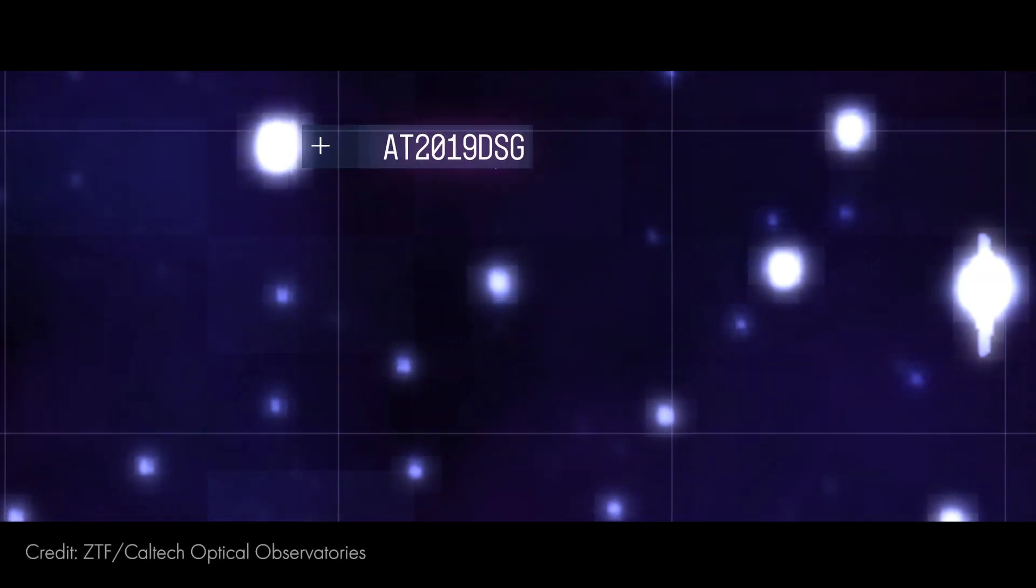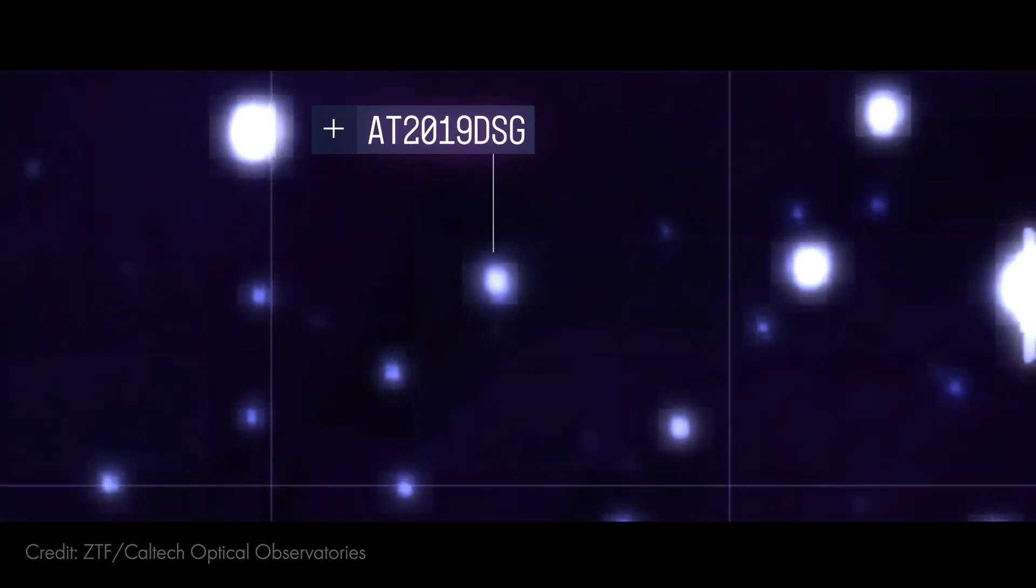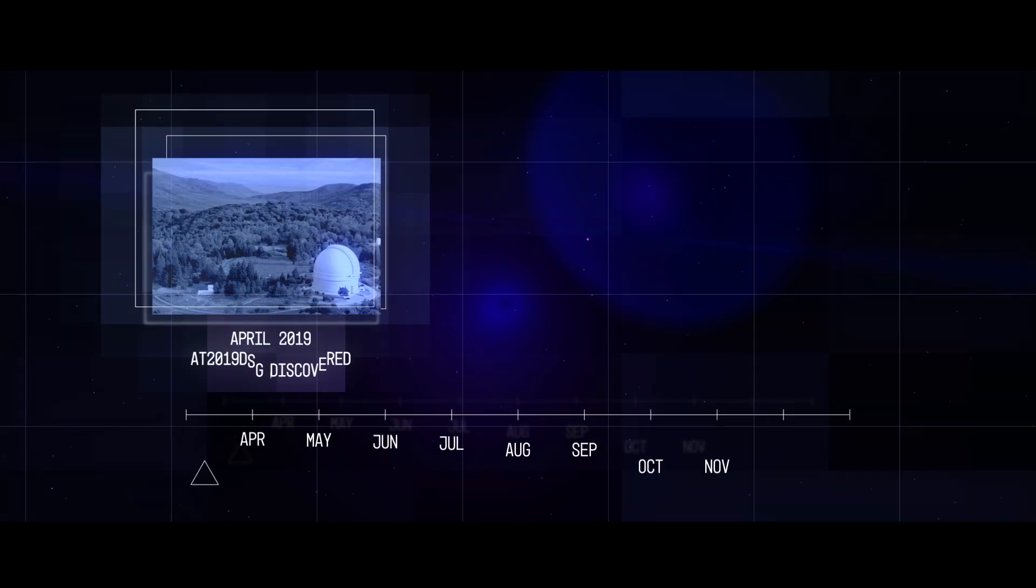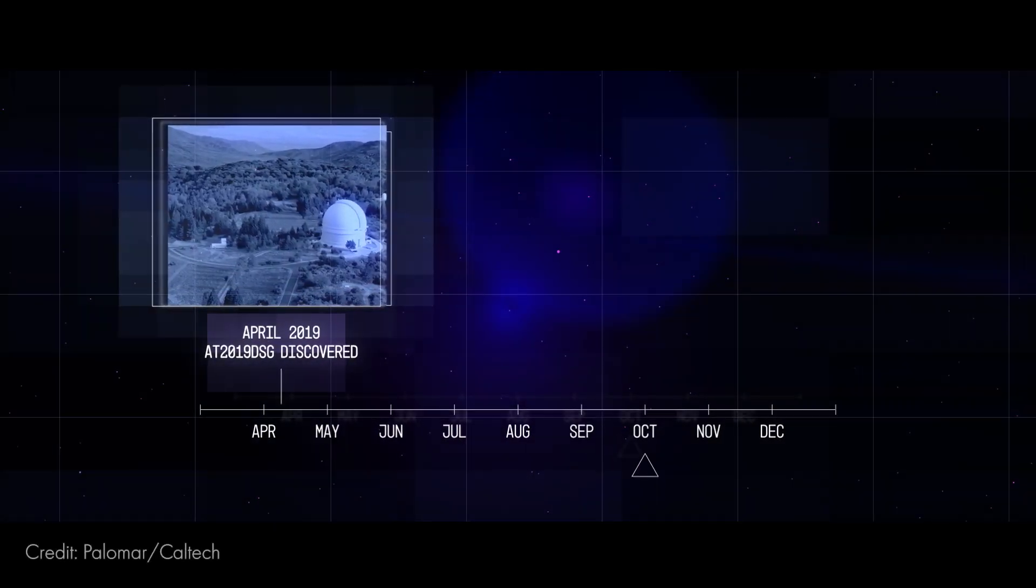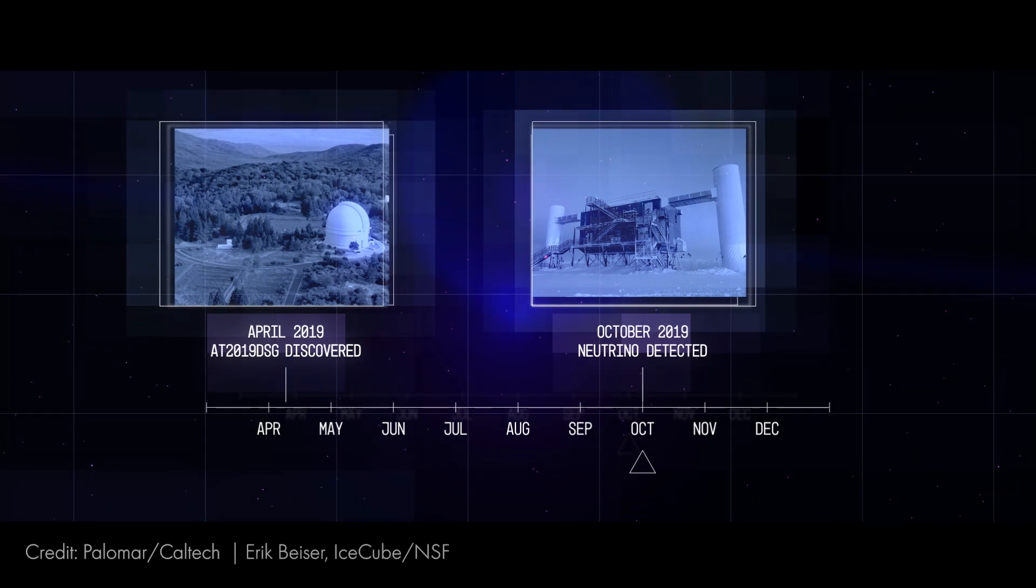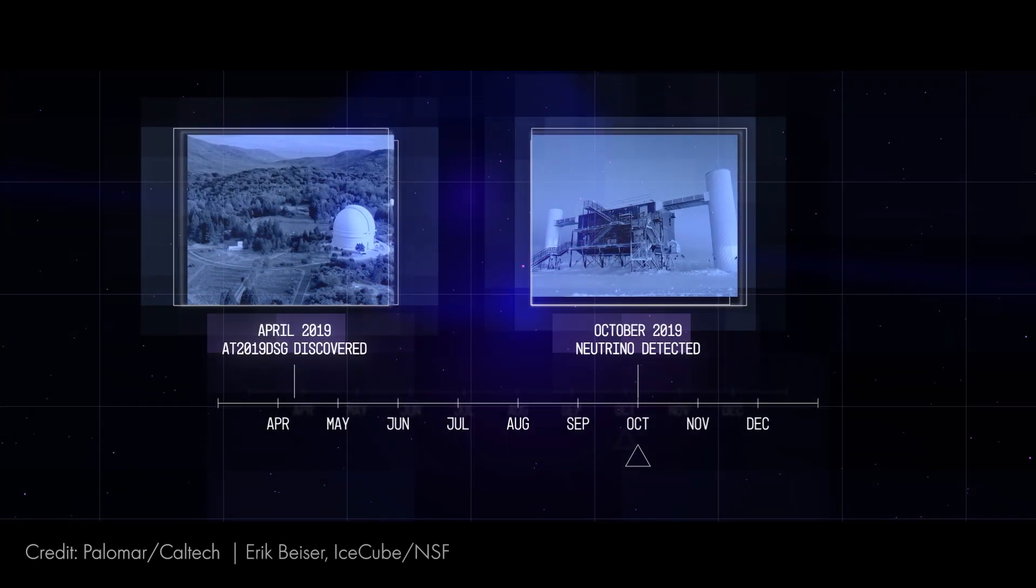However, a high-energy neutrino arriving from a tidal disruption called AT2019DSG offered new insights. An observatory called the Zwicky Transient Facility in California discovered the event in April 2019, but it wasn't until October that the IceCube Neutrino Observatory in Antarctica detected a high-energy neutrino astronomers linked to this event.